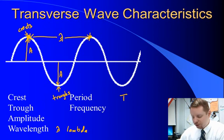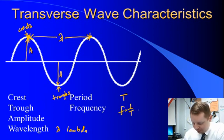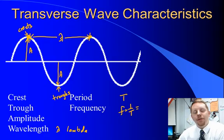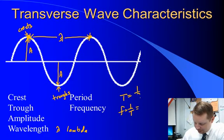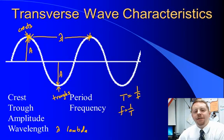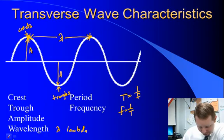And frequency, then, is one over the period, which is the number of waves that pass a given point in one second. And period, likewise, is one over frequency. So, we can use these different items to help us characterize waves.